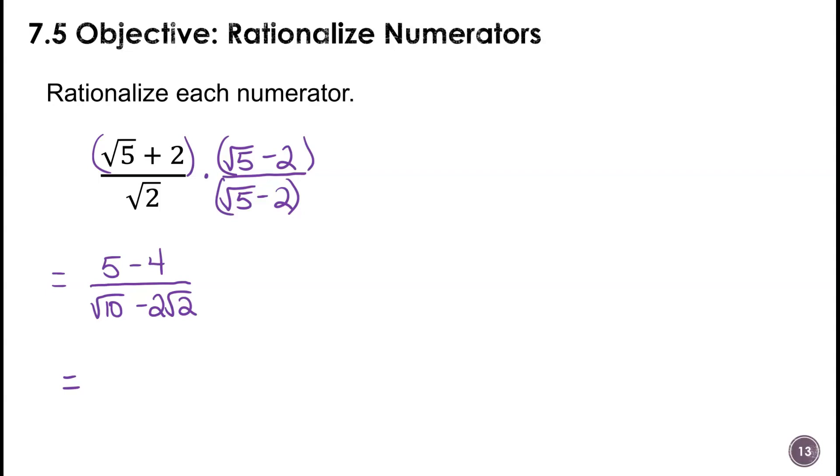And then we'll have the square root of 10 minus 2 radical 2. This simplifies just a little bit. 5 minus 4 is 1, and then the denominator stays the same.